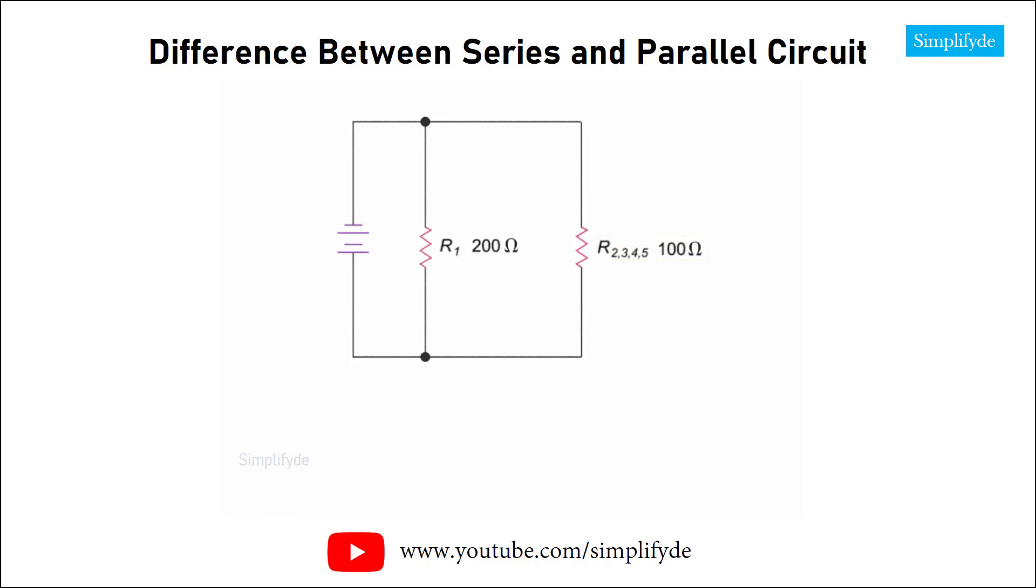And finally, we are left with two resistance values in parallel, the R1 resistance of 200 ohms, and the equivalent value of 100 ohms for resistors 2, 3, 4, and 5. Again, using the product over sum equation, we can determine the combined resistance. Multiplying 200 times 100 gives 20,000 divided by 200 plus 100, which is 300, resulting in an overall circuit resistance value of 66.67 ohms.